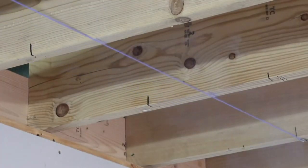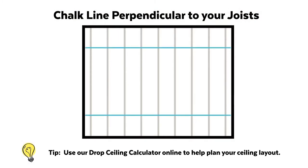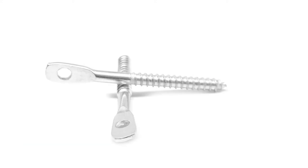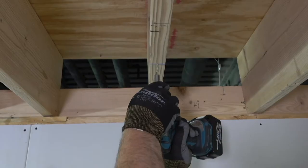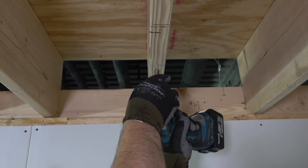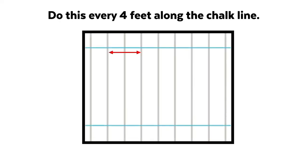To begin, snap a chalk line perpendicular to your joists and in line with where you plan to install your first main beam. Attach a lag screw or hanging screw to the bottom of the joist on the chalk line mark. Do this every 4 feet along the chalk line.